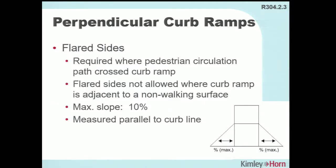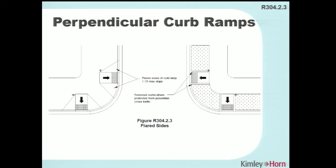If you have flared sides, they must be a maximum of 10 percent measured parallel to the curb line. Choose the appropriate side treatment for your conditions: if you have a pedestrian access route leading up to the curb ramp from the side, flares are appropriate — they're not part of the pedestrian access route but are part of the pedestrian circulation path. If you don't have sidewalk coming up along the edges of those curb ramps, there's no reason for flares — just use curb sides.